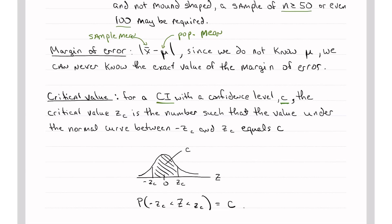The critical value, Z sub C, that's what the book uses, is the number such that the value under the normal curve between negative Z sub C and positive Z sub C, that area equals C. So I've drawn a picture down here, and you'll see that it's in the Z axis because it's the standard normal. And we have negative Z sub C here, and positive Z sub C here. And of course, the mean of the Z distribution, the standard normal, is zero. And the area under the curve between these two values is going to be C. And I've written it out in notation. The probability that Z is between negative Z sub C and positive Z sub C is C.